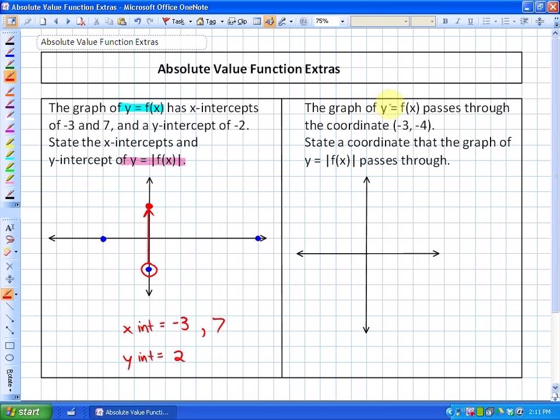In the next problem, it says the graph of y = f(x) passes through the coordinate (-3, -4). So the typical function, non-absolute value function, passes through (-3, -4), which is right here. And it says, state a coordinate that the graph of y = |f(x)| passes through.